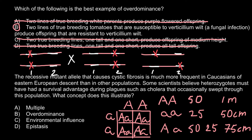The next question: the recessive mutant allele that causes cystic fibrosis is much more frequent in Caucasians of Eastern European descent than in other populations. Some scientists believe that heterozygotes must have had a survival advantage during plagues such as cholera that occasionally swept through this population. What concept does this illustrate?